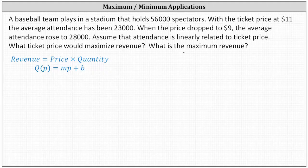Recall revenue is equal to price times quantity, where in our case the quantity would be the attendance. And because we know it's linear, we can say Q of P is equal to MP plus B, where M is the slope and B is the vertical or y-intercept.